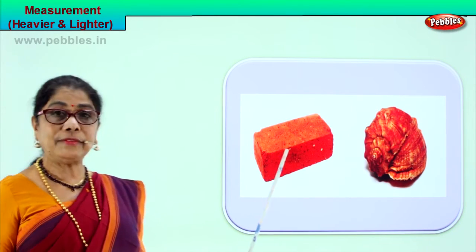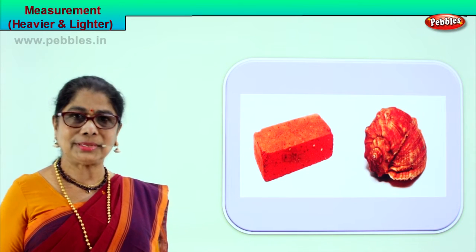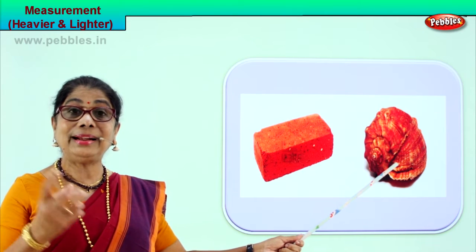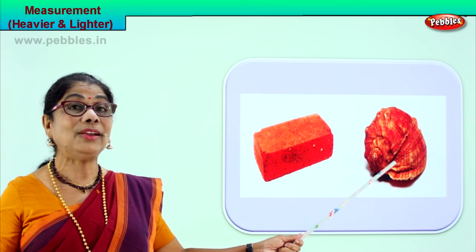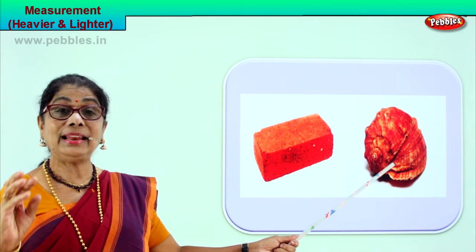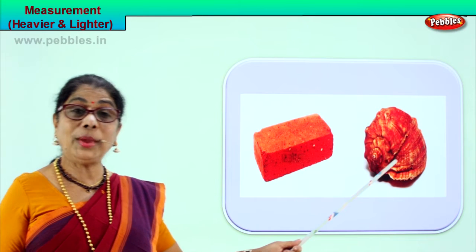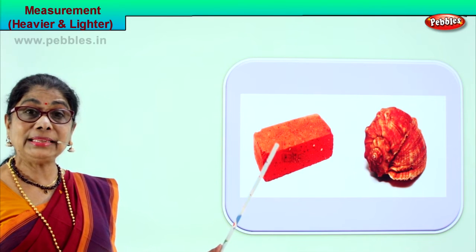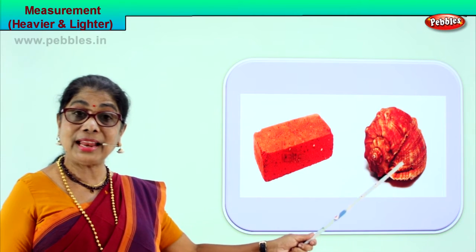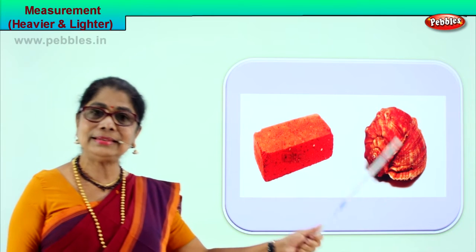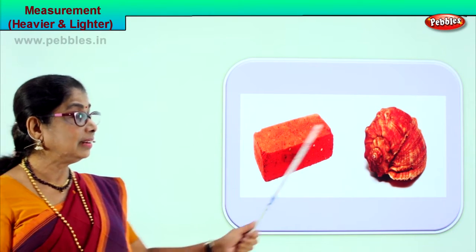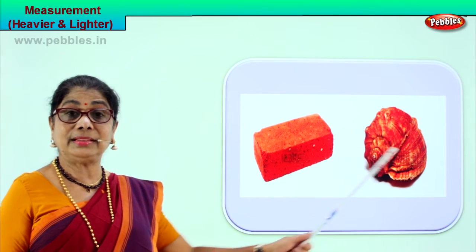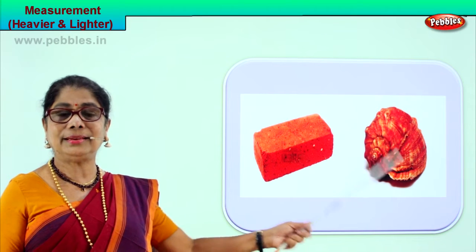Let's look at one more picture. You have a brick — you use bricks to build houses — and you have a shell. You find shells at the sea or on the riverside; a little animal lives in it. When you weigh a shell and the huge brick, the brick is heavier than the shell. The shell is lighter than the brick.